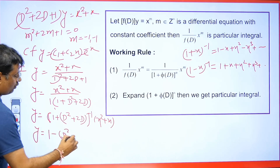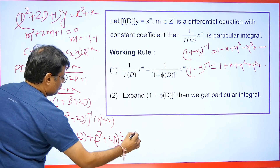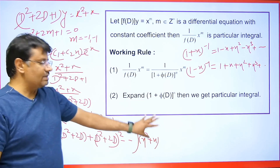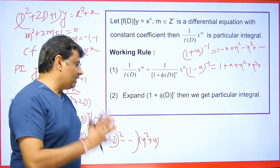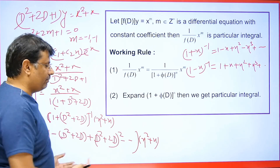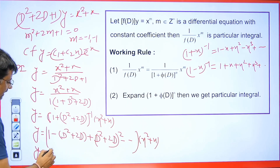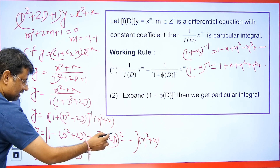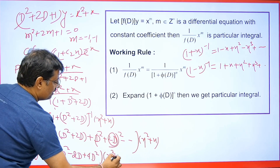So we get 1 minus (D square plus 2D) plus (D square plus 2D) whole square, and so on. The highest derivative of x square plus x is 2 — differentiate once and we get 2x plus 1, second time it becomes 2, third time it is 0. So in this expansion, only the terms up to D square are relevant; the rest can be neglected. Now let's expand clearly: it becomes 1 minus D square minus 2D, and from (D square plus 2D) squared the useful term is 4D square.